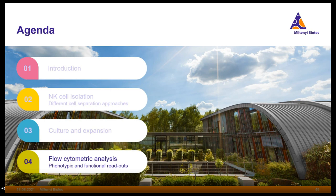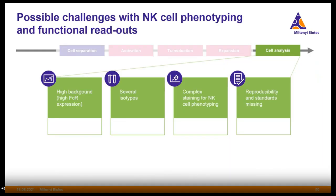The final chapter focuses on flow cytometry-based analysis of NK cells — both phenotyping and functional readouts. Possible challenges include high background, the need for many isotype controls, complex staining panels, and concerns about reproducibility. To address these, I'll introduce REAfinity antibodies, which are recombinantly generated to ensure reproducible results.